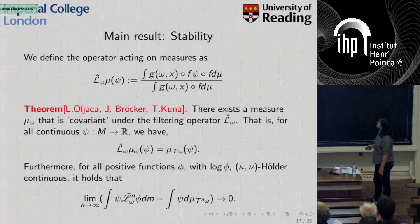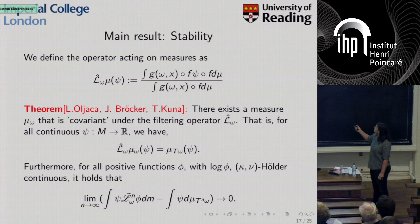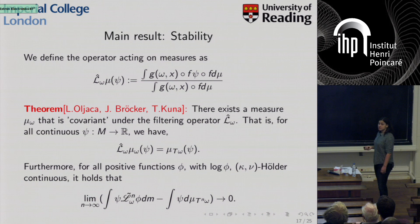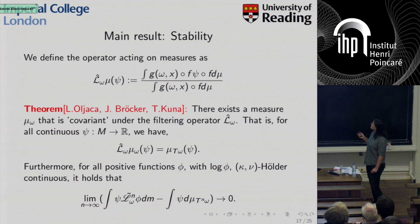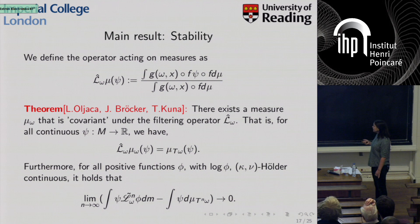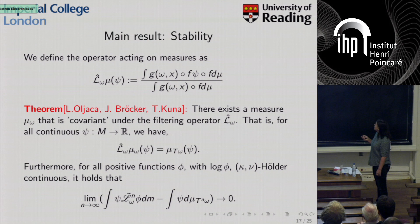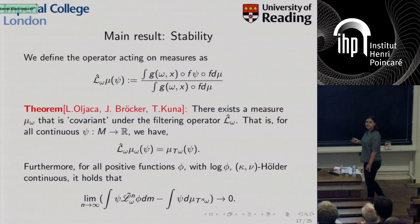Our main result is as follows. Reformulating the filtering operator on measures — with a transfer operator and likelihood function — there exists a measure mu_omega that is covariant under this operator, meaning it is a stationary solution. For any positive log-Hölder function representing the initial density, the filtering converges to the filtering of mu_omega as time goes to infinity — this is the stability result we obtain. This approach also gives rise to a decay rate.